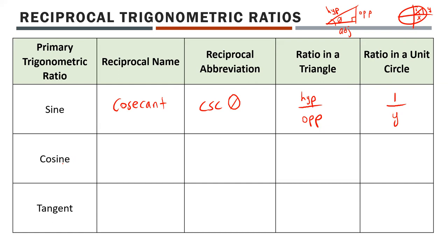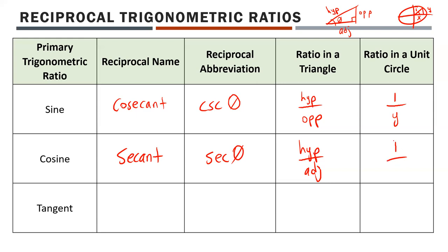The reciprocal of cosine is called secant, abbreviated SEC. You might notice the pattern: sine has a 'co' (cosine), and cosine pairs with secant (no 'co'). In a right triangle, cosine is adjacent over hypotenuse, so secant is hypotenuse over adjacent. In a unit circle, that's 1 over x, since adjacent equals the x-coordinate.